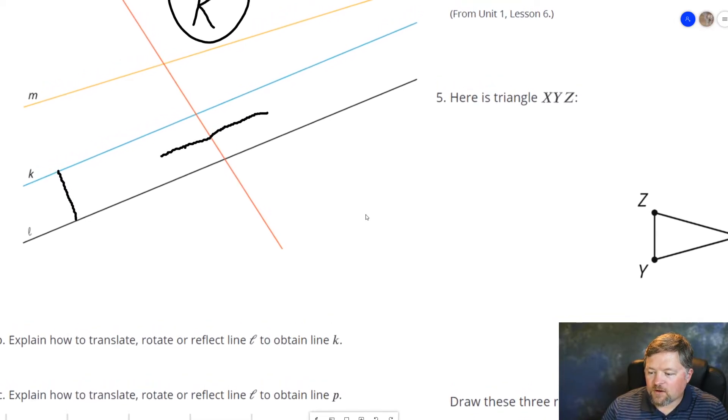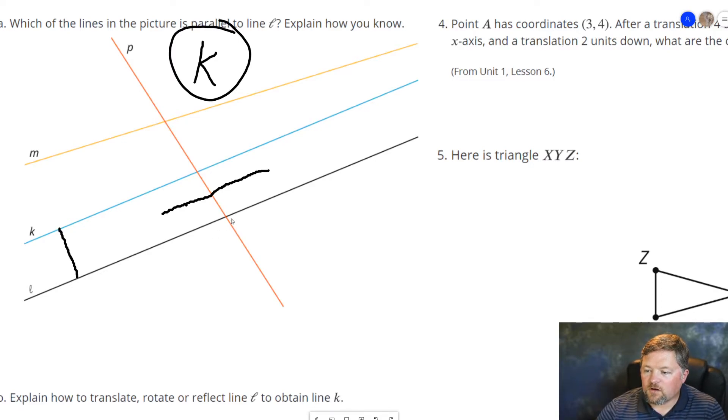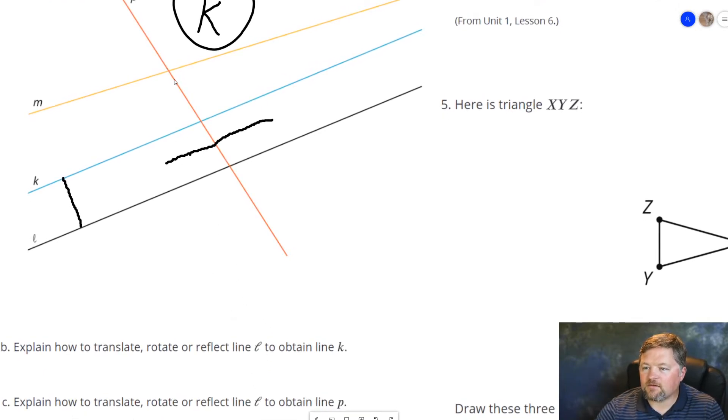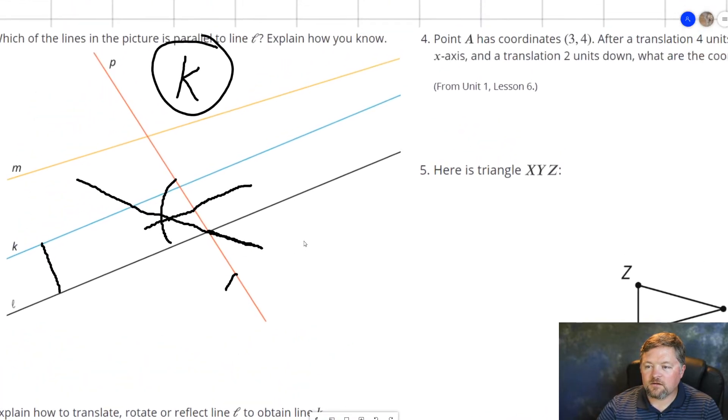Explain how to translate, rotate, or reflect line L to get line P. So if we want to translate L to P, translations are just slides. No amount of sliding L around is going to put it where P is. If we want to rotate line L to be line P, we would rotate it around this point this many degrees, and that would put line L onto line P. How about a reflection? If we took the line that divided that in half, and if we reflected line L over this line, it would put it right onto line P. So to turn L into P, we can rotate or reflect and get it, but we cannot translate.